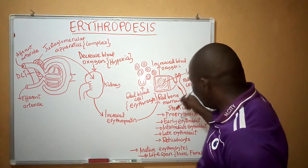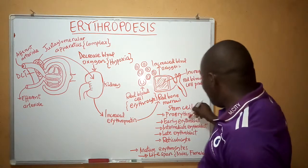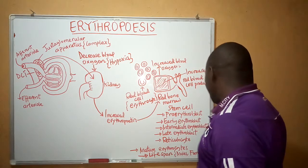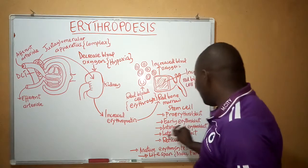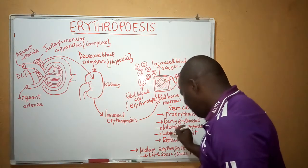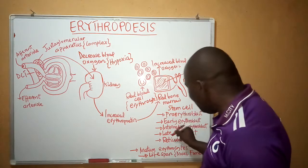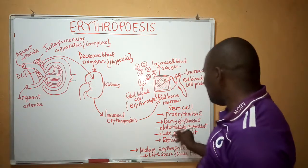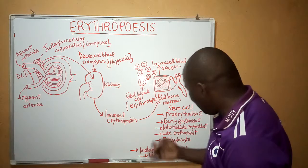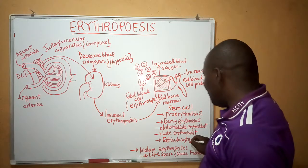As time goes on, the sizes of these cells will be decreasing. From erythroblast, the l-erythroblast will be transformed into intermediate erythroblast, then into late erythroblast, and then late erythroblast will be transformed into reticulocytes. From reticulocytes, the nucleus which was present at the earlier stage will be expelled out.